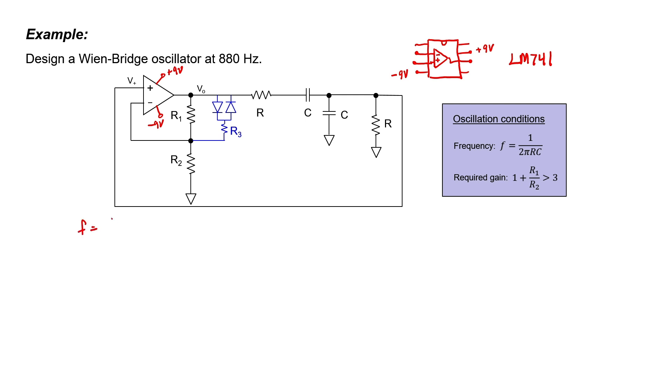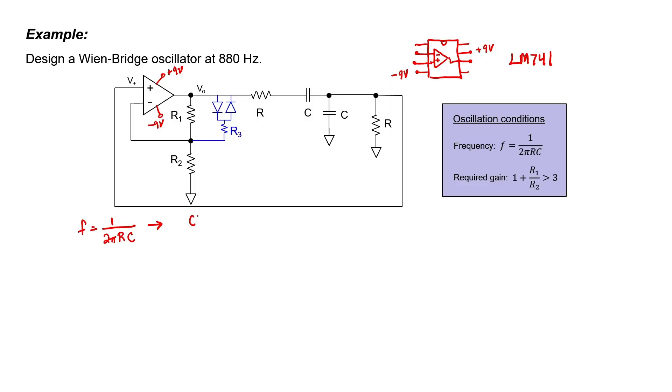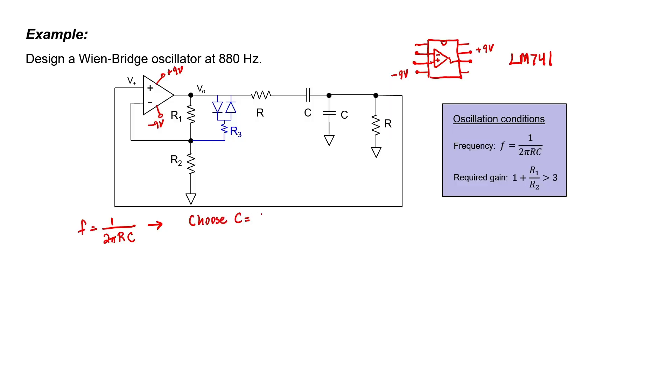Let's now calculate appropriate values for resistor R and capacitor C. We have a bit of freedom here. We can choose a value for the capacitance knowing the frequency, then we can find an appropriate value for R. Because 880 Hz is a medium range audio frequency, I'm going to choose a capacitor value of 18 nF. Because F and C are now given, we can calculate R.